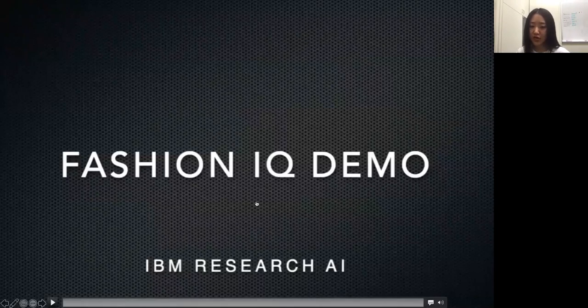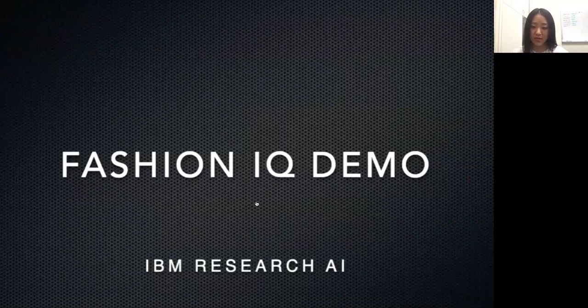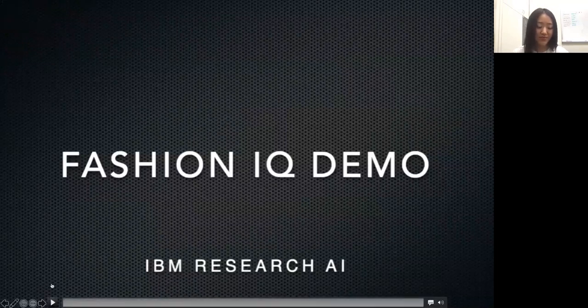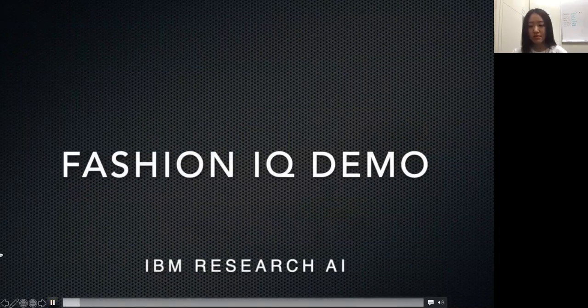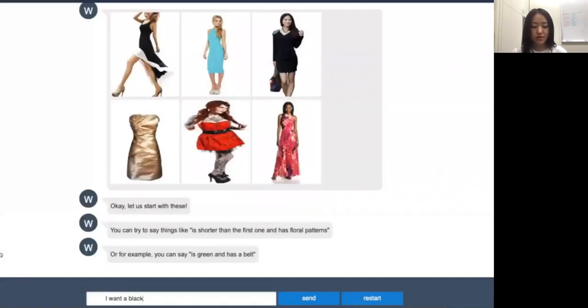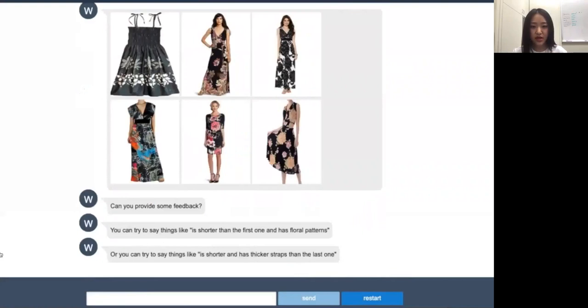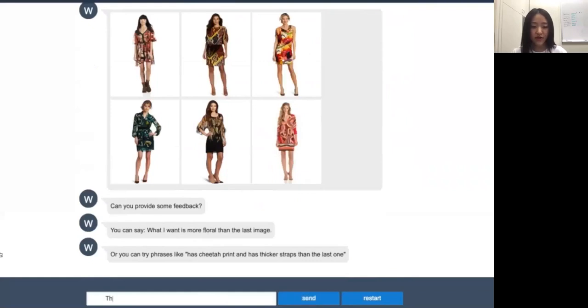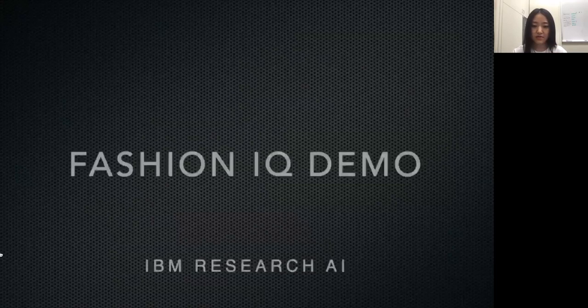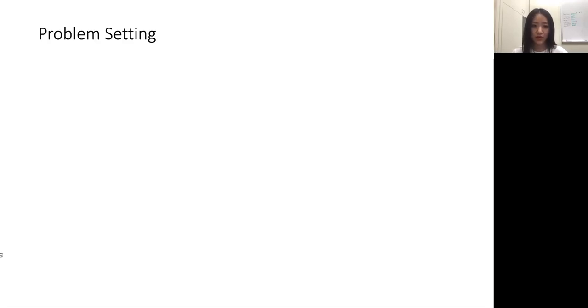Before we dive into the technical detail of how our system is implemented, we can see a demo of our work. We recently showed this demo at CVPR demo track. At the beginning, users can provide a text natural language query, and the system will return top matched images. Then the user can refer to a specific image and provide relative feedback. The results are refined at each step.